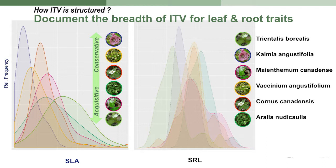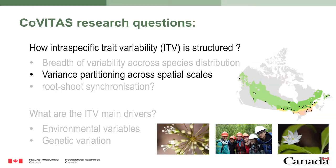Just to show briefly — for the breadth of intraspecific trait variability, for SLA we really have a nice ordination of species between conservative and acquisitive. But for root traits it's really far more messy — we don't see this kind of nice ordination of the species. So there are a lot of differences between species and no clear coordination that we could easily find.